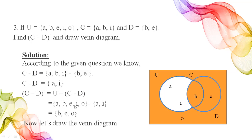Then we find the whole complement: U difference (C difference D). The universal set is {a, b, e, i, o} and C difference D is {a, i}, so the answer is {b, e, o}. In the Venn diagram, the circle for C contains elements a, i, b; the circle for D contains b and e; and the shaded area shows the answer — (C difference D) whole complement.